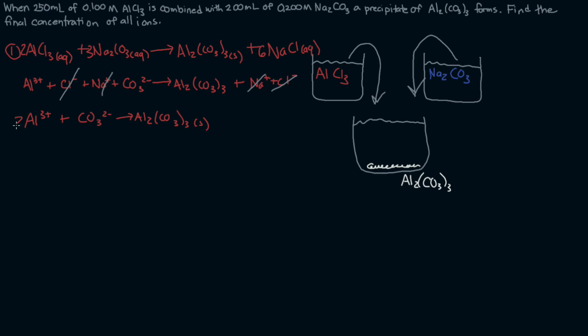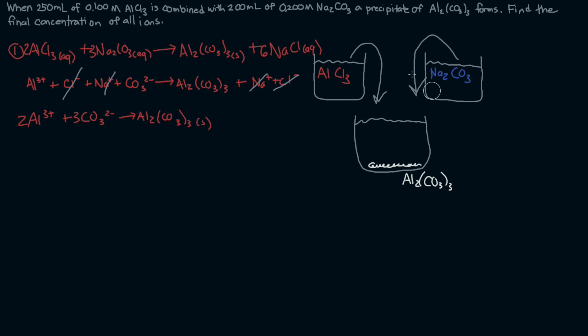Here we need two aluminums and we need three carbonates. This is going to be a very useful equation when we get to that tricky part and we're trying to figure out how much of the excess reactant we have left. I'm going to erase this picture to give us more space.